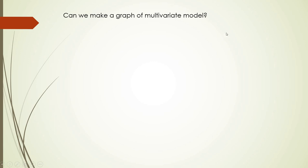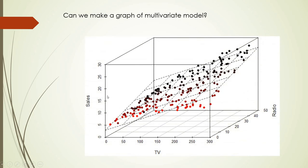Making a graph of a multivariate model is impossible with more than two independent variables, but with two it is still possible. For example, with sales as y and investments in TV and radio advertising as the two independent variables, instead of a straight line you get a surface — a plane — resembling a chessboard with interrupted lines representing the theoretical data, while the red, purple, and black dots represent the original data points.